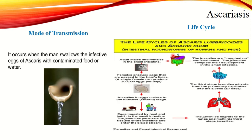First, when the egg hatches into larvae in the host intestine, the egg becomes a larva. This larva will then move through the body via the bloodstream to the lungs.